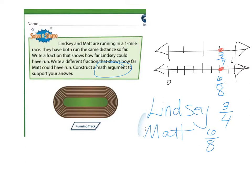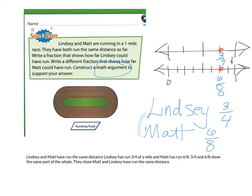Now let's construct an argument to support our answer. Two fourths and four eighths show the same part of the whole — they show Matt and Lindsay have run the same distance. Since they are both at the same point on my number line, the same distance from zero, and we're talking about the same whole, Lindsay and Matt have run the same distance.